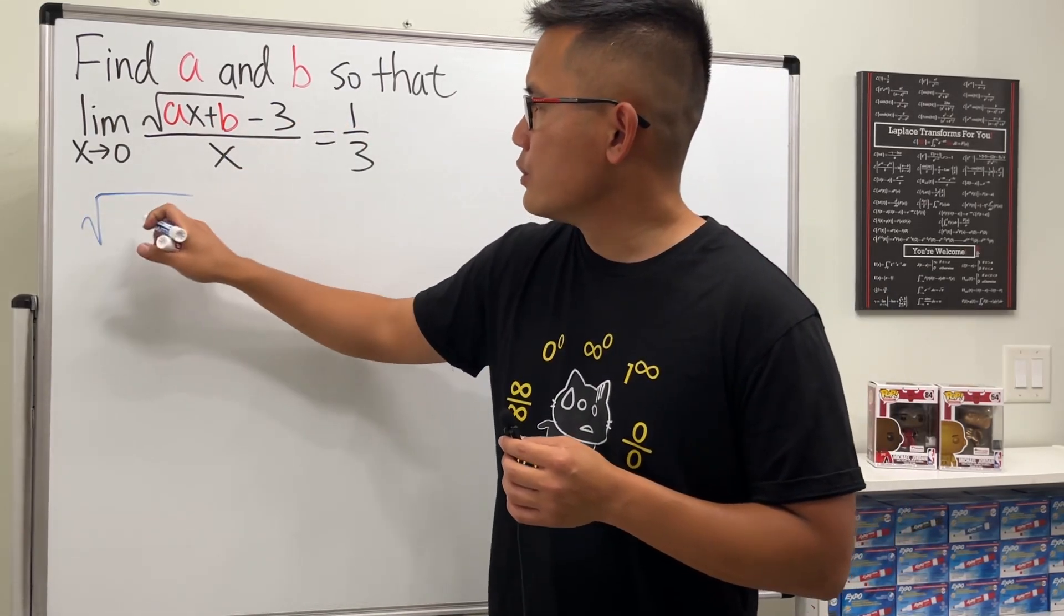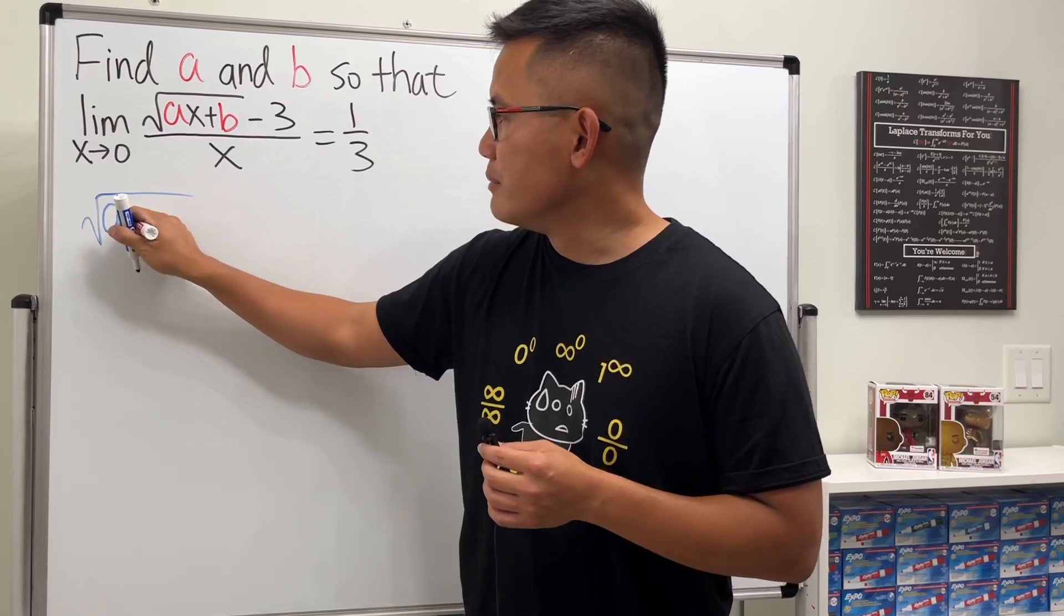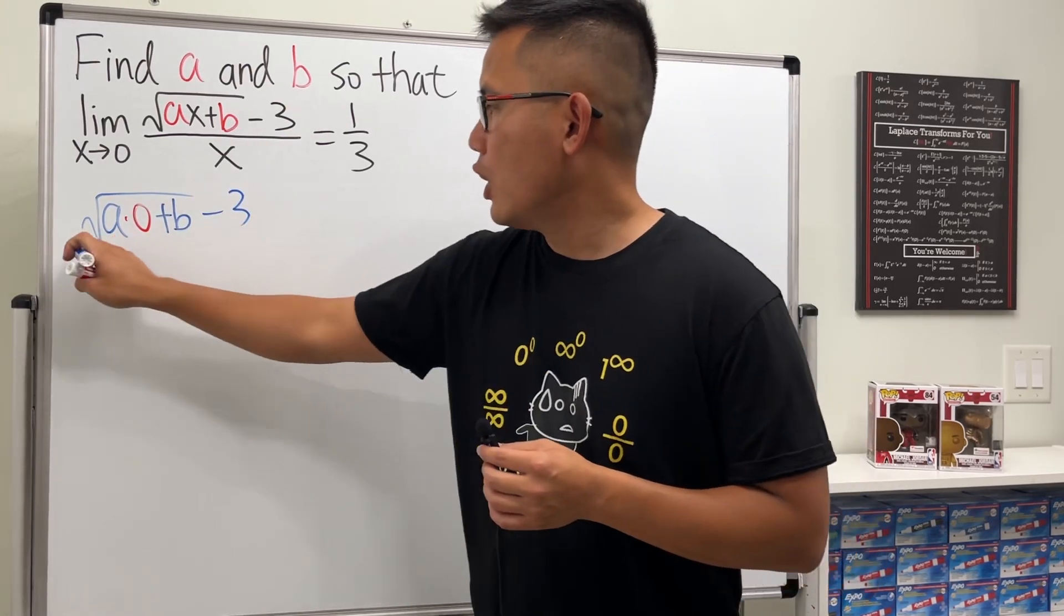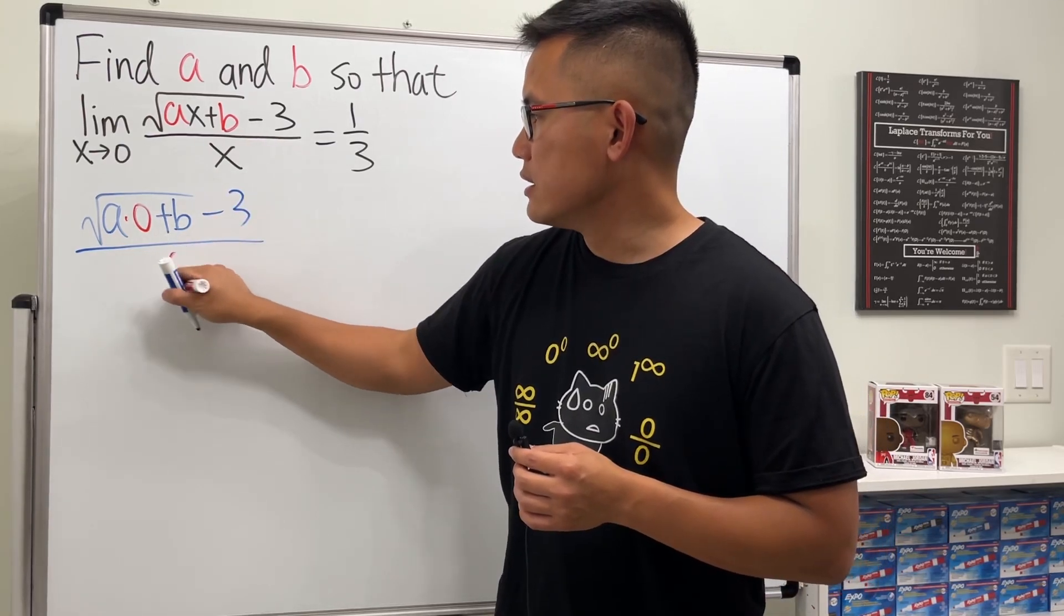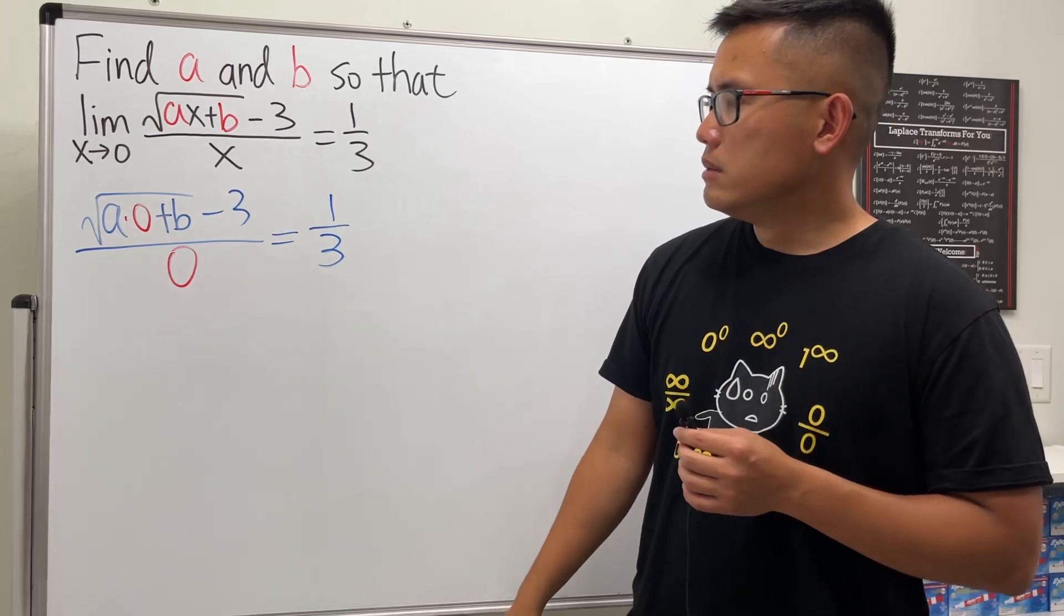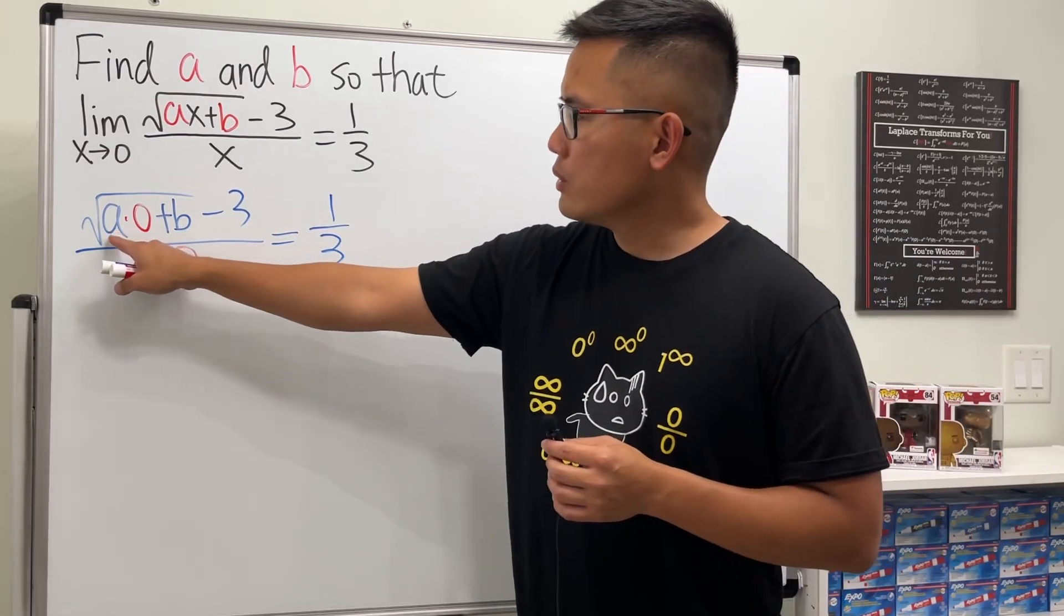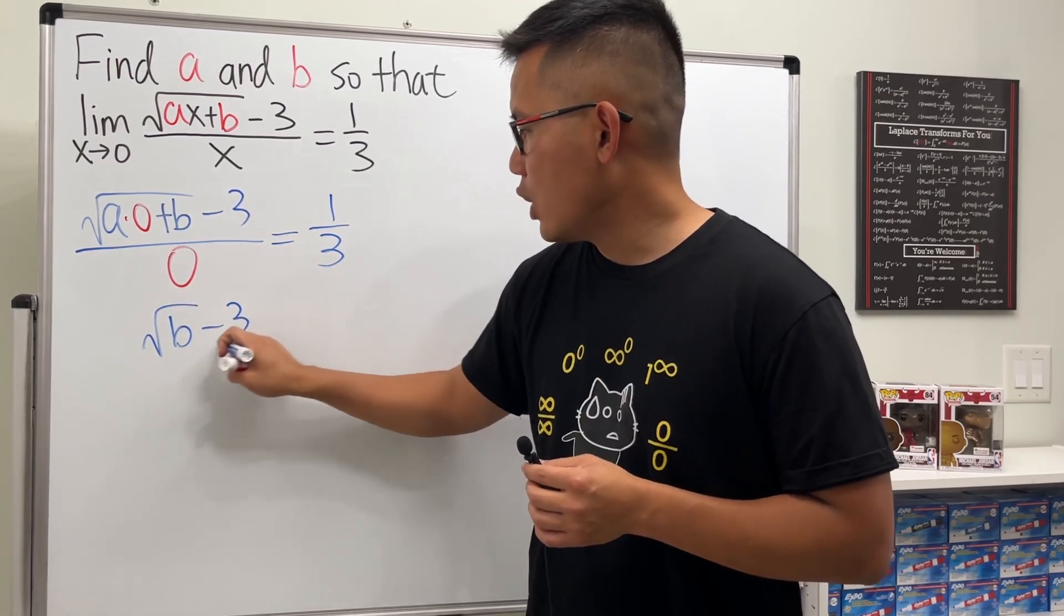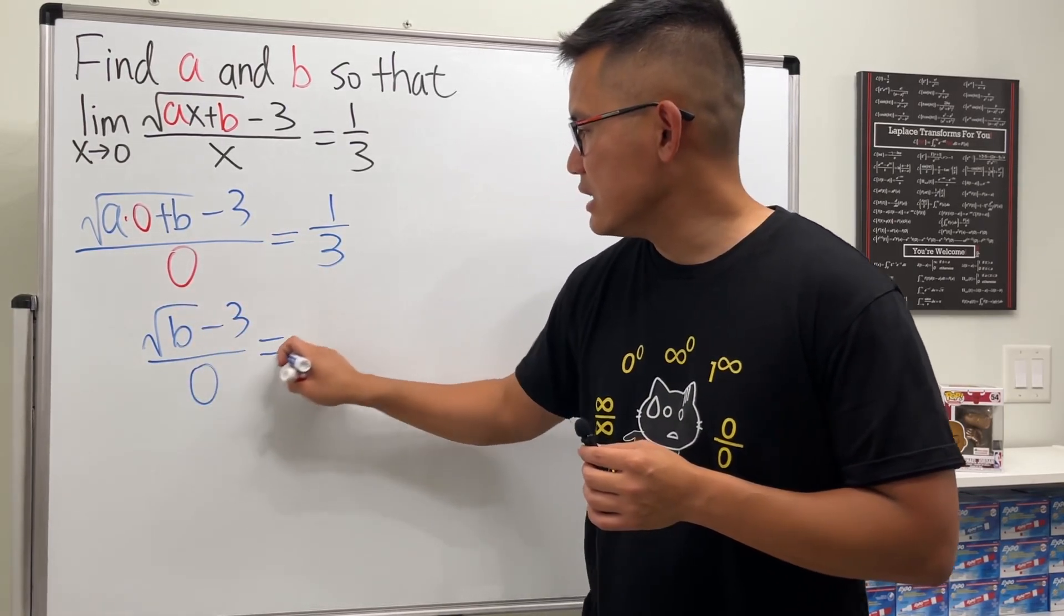So when we do that, we are going to get square root of a times zero, and then plus b, and then minus three, over zero. And then this is equal to one over three. Okay, so that's just zero—it's just square root of b and then minus three over zero, and this is equal to one over three.